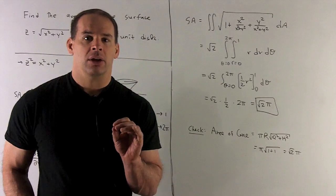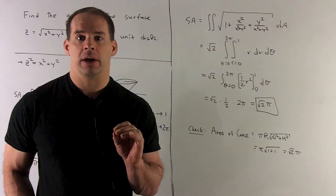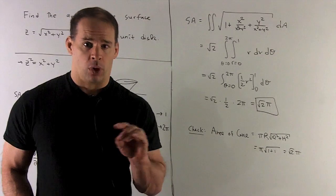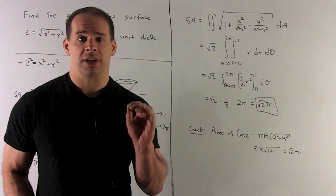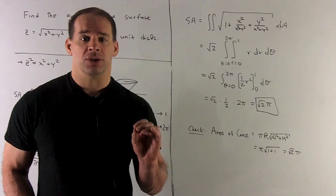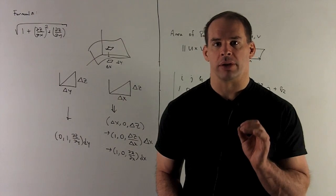You check. We have a right circular cone. The radius of the base is 1, the height is 1. The area formula for a right circular cone is pi times r times square root of r squared plus h squared. So it's going to be pi times the square root of 2.